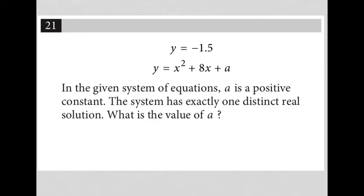This question starts off by providing these two equations here. We're told that y is equal to negative 1.5, and then we're also given that y is equal to x squared plus 8x plus a. I'm going to combine these two equations and just write this as a single equation, which says negative 1.5 equals x squared plus 8x plus a.